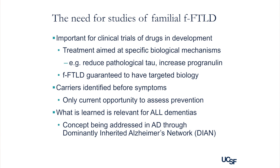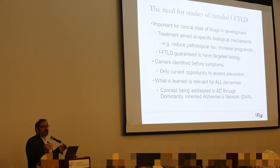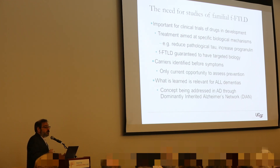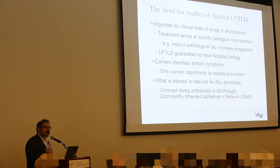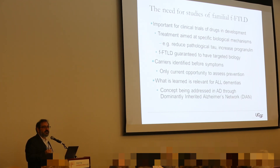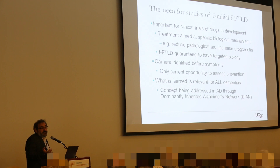Another reason these families are important is that this is currently the only situation where we can figure out if a treatment is doing anything before somebody gets symptoms. Because we know exactly who is going to get symptoms - although we don't always know when - and who is at the same risk as everybody else. These kinds of studies don't just help families affected by these diseases; they help us understand how degenerative diseases set in for all of us. It's just that among the general population, we don't know who is going to face this problem.